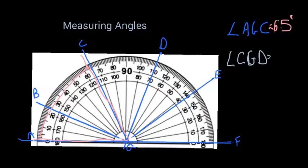So we start at C which is at 65 on the outside numbers, go down to G and then go up to D which is at 110. So we're between 65 and 110. So we just take those two and we subtract them to get what our angle measure is. So that would be 110 minus 65 is 45. So CGD would be 45 degrees.